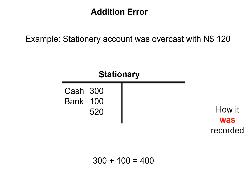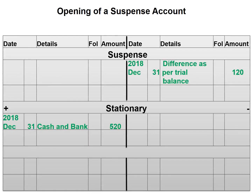Because 300 plus 100 is equal to 400, we need to open a suspense account for the difference. Our suspense account will be on the credit side, and it will read 'difference as per trial balance: 120.' The 520 on the debit side of stationery will remain for now.